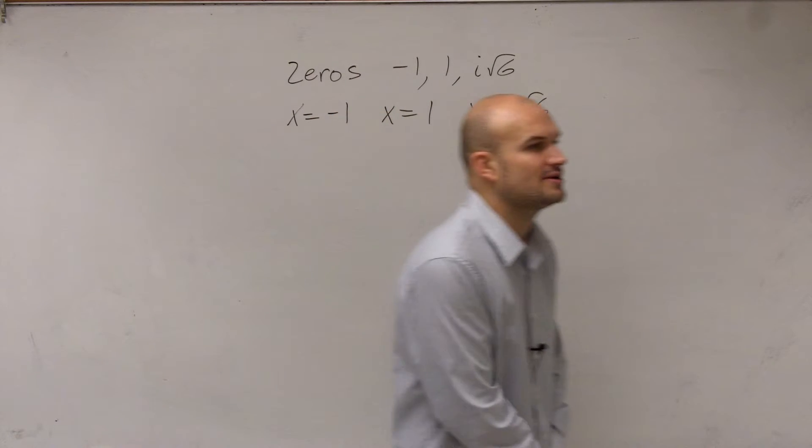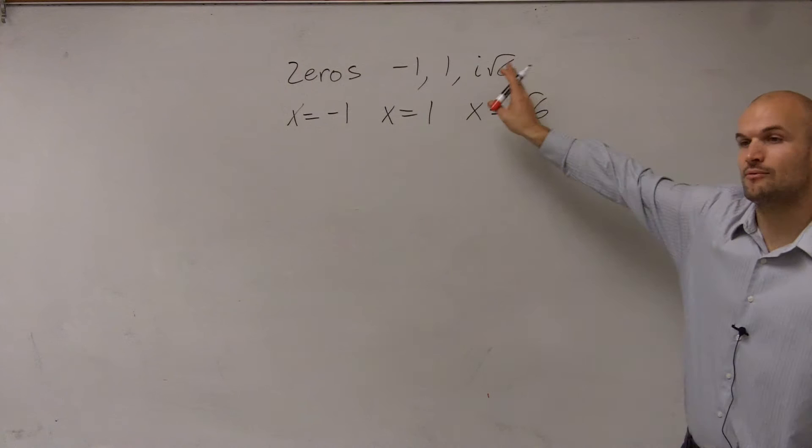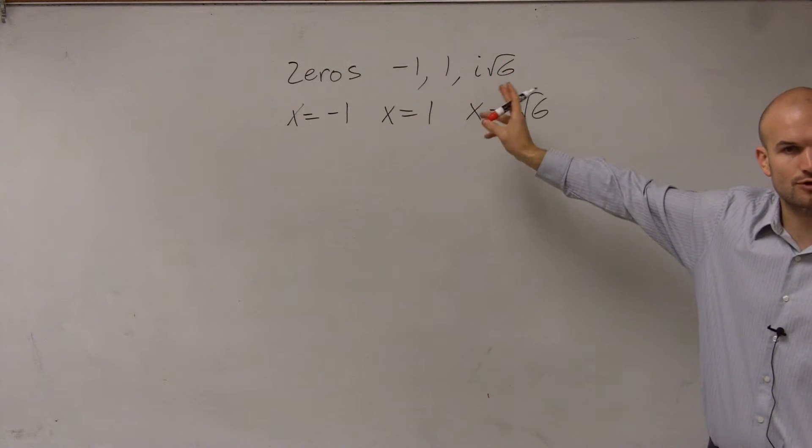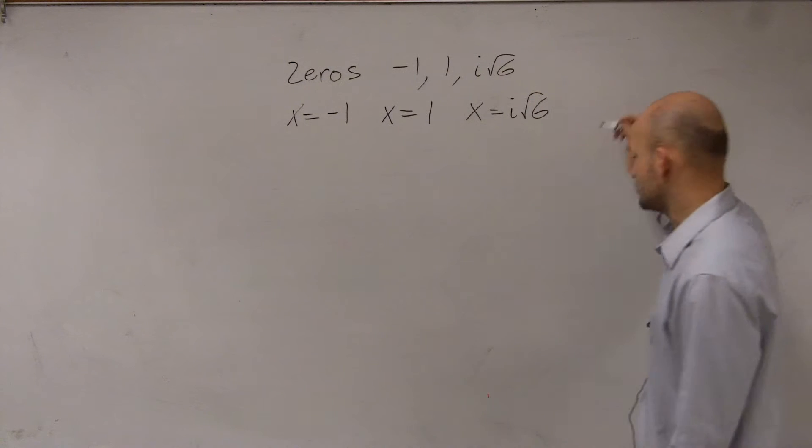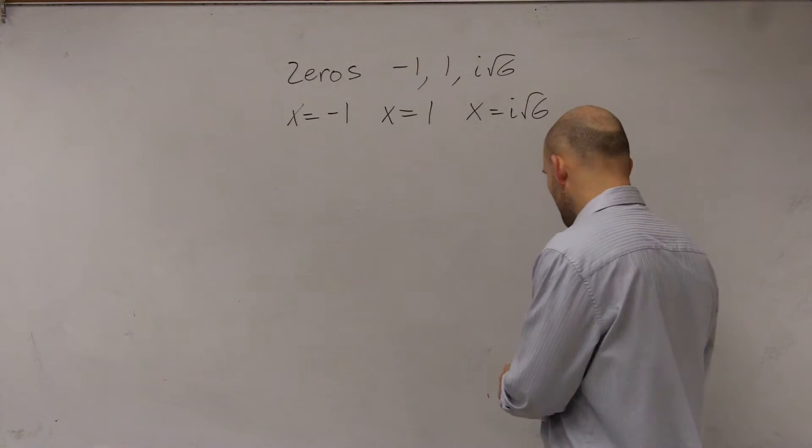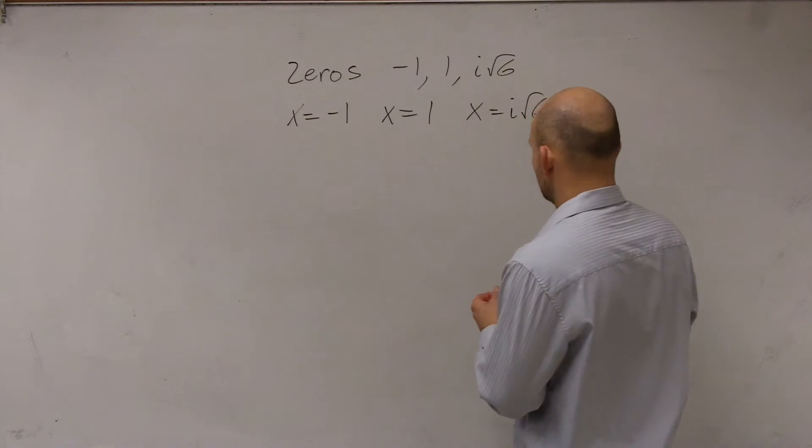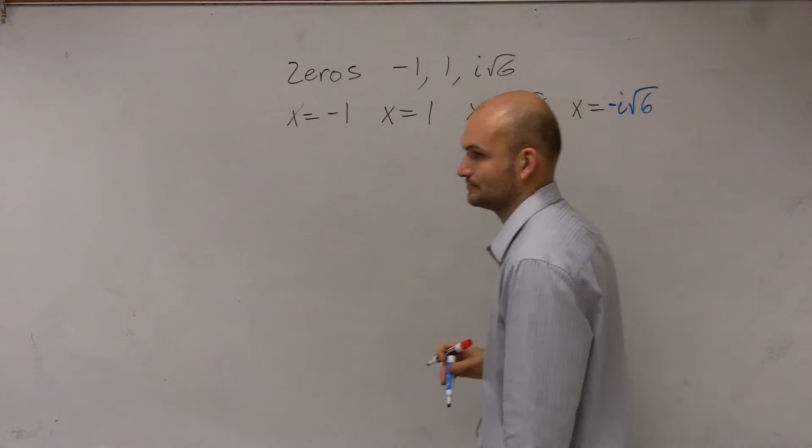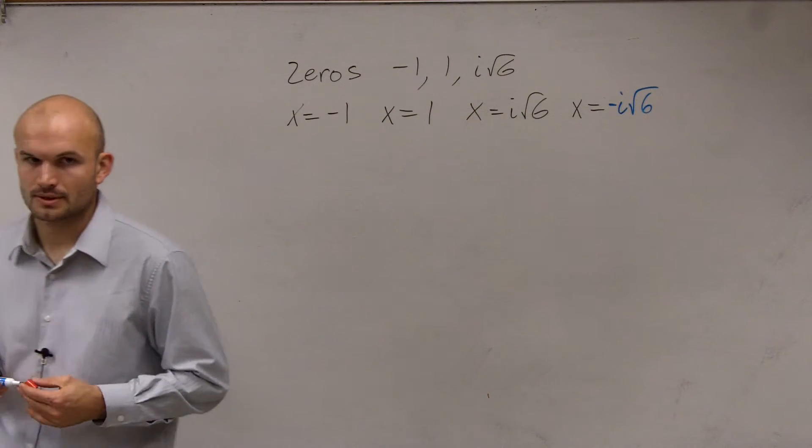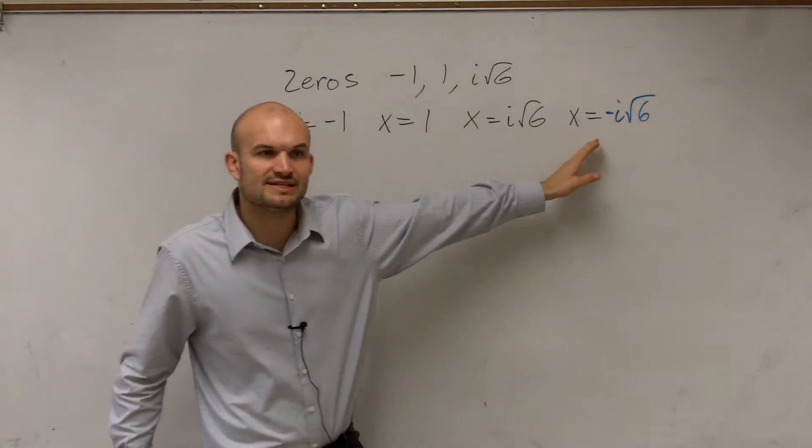Now, the difficult thing with this problem is you guys need to remember the conjugate root theorem. That says that whenever you have a complex number as a root or a zero, that you have to make sure you include the conjugate. So now we need to make sure we also include, we also say x equals negative i square root of 6. So therefore, now we actually have all four of these zeros.